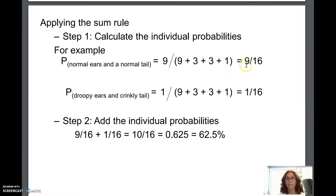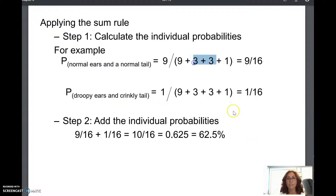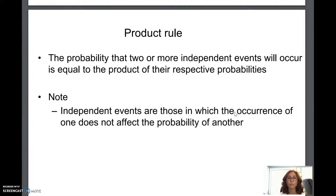A mouse with droopy ears and a normal tail can't also have normal ears and a crinkly tail. To calculate: nine divided by nine plus three plus three plus one equals nine-sixteenths for normal ears and normal tail. Droopy ears and crinkly tail would be one-sixteenth of the time. Adding these outcomes together, you'd end up with 62.5% of the time getting those two outcomes. One-sixteenth of the time you get the homozygous recessive; the rest of the time you get homozygous dominant or heterozygous individuals.